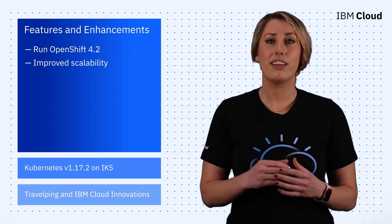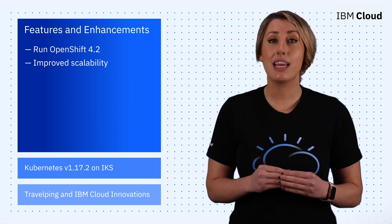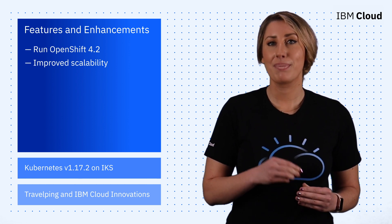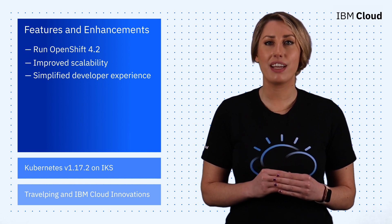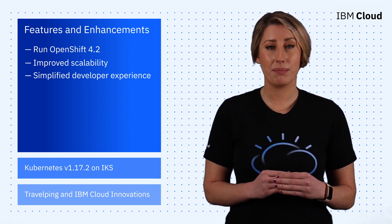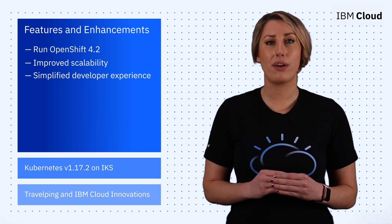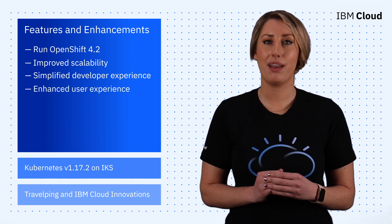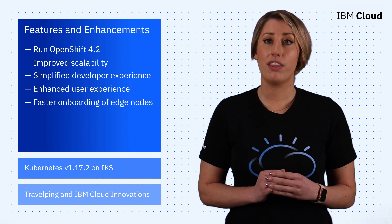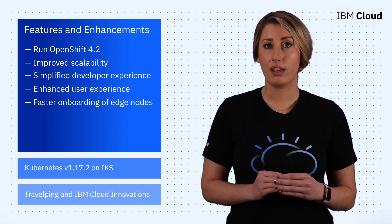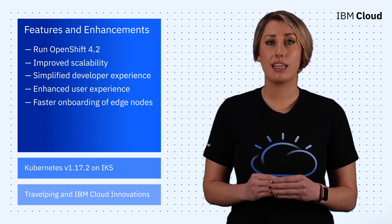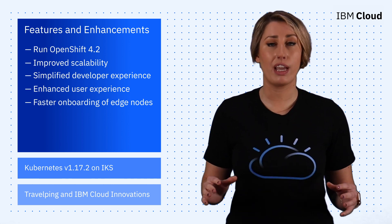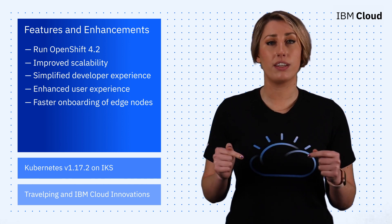Second, there is improved scalability for Edge devices, up to 10,000 Edge devices per Edge Application Manager hub. Third, this release provides a simplified developer experience with OpenShift Platform and supports an Edge-native programming model. Fourth, you'll enjoy an enhanced user experience with the Edge UI. And fifth, this release provides faster onboarding of Edge devices via bulk installation and registration of the agent. For a full rundown of everything you'll get with the 4.0 release, hit the link in the description below.